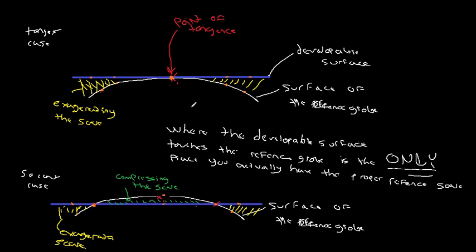The reason we care about the tangent and secant case is that we have the option to just exaggerate, or to exaggerate and compress. Through manipulation of the size, shape, and aspect of the map projection, we can control the location of these tangent and secant lines to minimize distortion in the areas we're most concerned with. These tangent and secant lines are the only places we'll actually meet our reference scale. Hopefully this makes sense — if you have any questions, please reach out. Thank you.